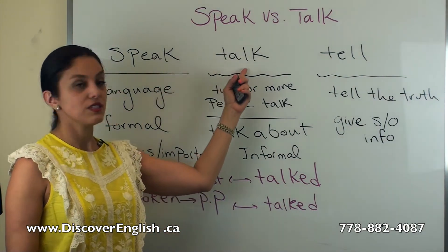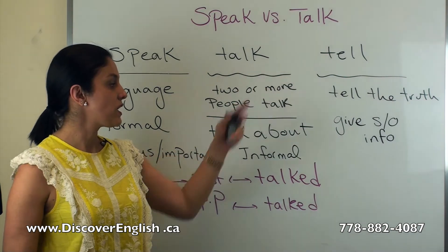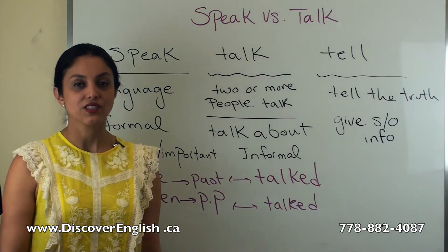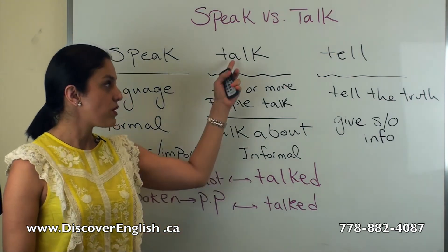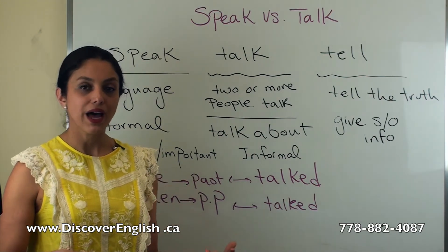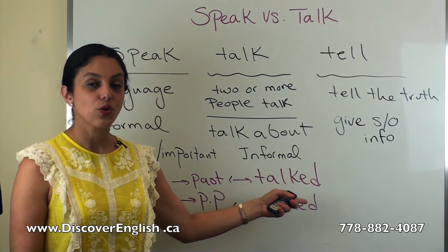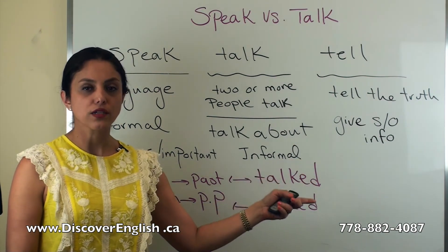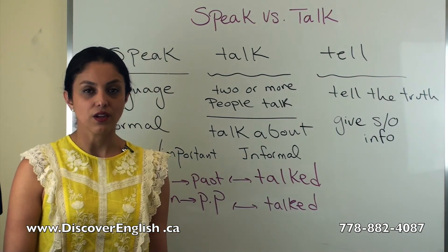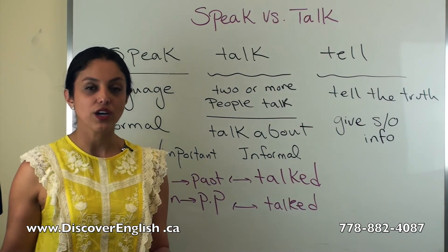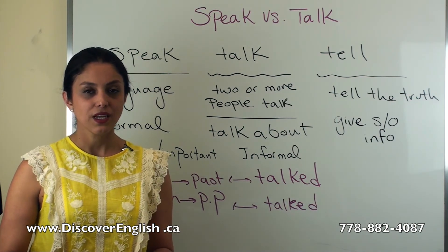'Speak' is irregular, 'talk' is regular. Use 'speak' in formal situations and 'talk' in informal ones. The past tense of 'speak' is 'spoke' and the past participle is 'spoken,' while 'talk' uses 'talked' for both. And don't forget the pronunciation — because the 'k' is unvoiced, you say 'talked' with a /t/ sound. I have another video explaining the difference between voiced and unvoiced sounds — go back and watch that one.